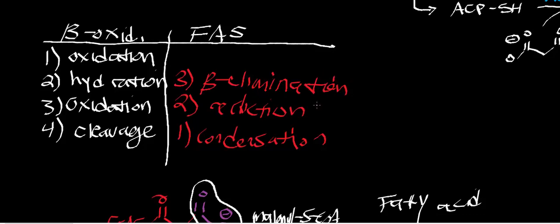This beta elimination will have the same mechanistic steps as, for instance, the first half of the mechanism of aconitase hydratase. At that point we should have an alkene, and so the last step of fatty acid synthase would be reducing that alkene down to an alkane — which is what we essentially started with in beta-oxidation. So in fatty acid synthase, it's definitely the reverse of beta-oxidation.